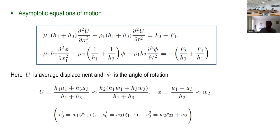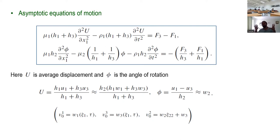Now, probably the biggest challenge we have had with all of this is how to properly formulate the boundary conditions. With this asymptotic equation of motion, basically what we do is take the whole laminate and try to replace it by some lower dimensional model. But then what do you do if you have a semi-infinite structure with some load applied to the boundary? How would this load be transformed to a lower dimension? This is one of the most delicate problems in elasticity.